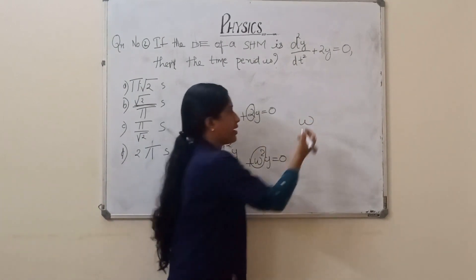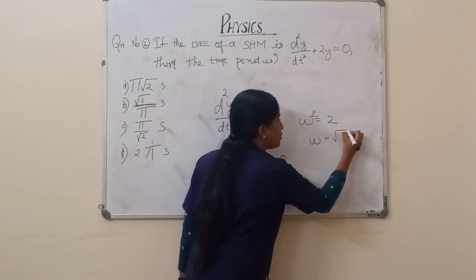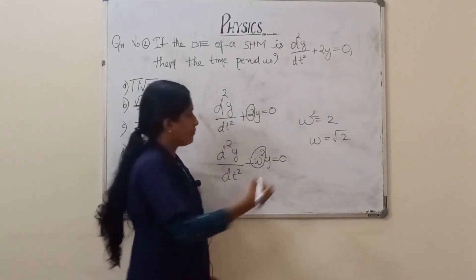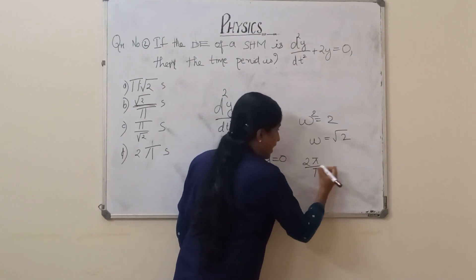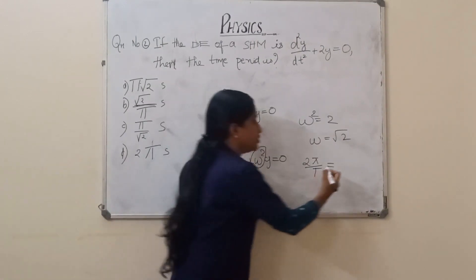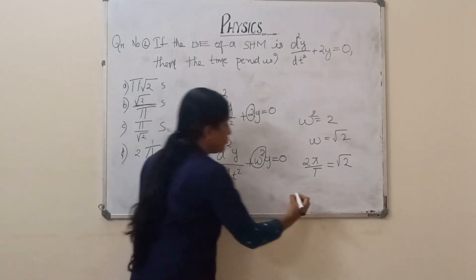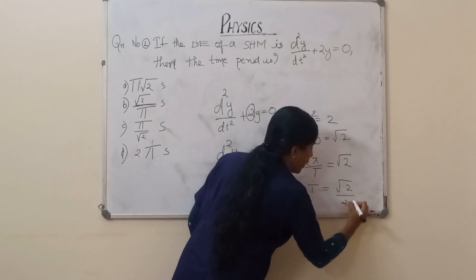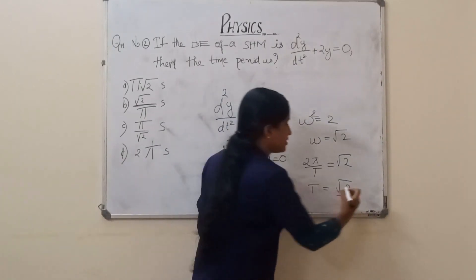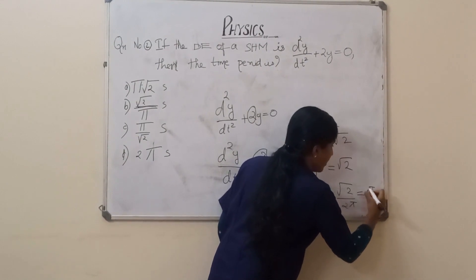Comparing, we get ω² = 2, so ω = √2. And since ω = 2π/T, we have 2π/T = √2. When we rearrange this, we get T = 2π/√2, that is, T = π/√2 seconds.